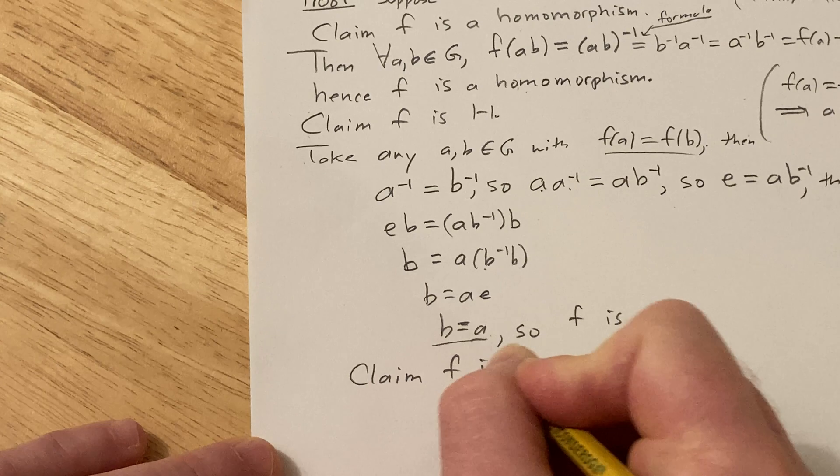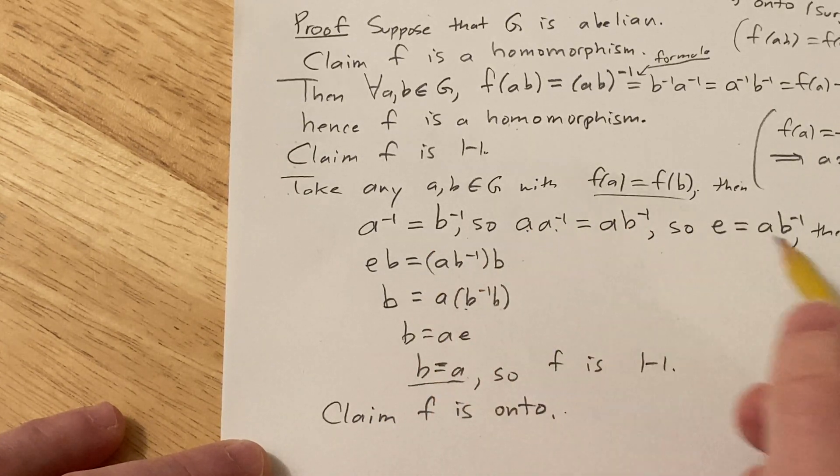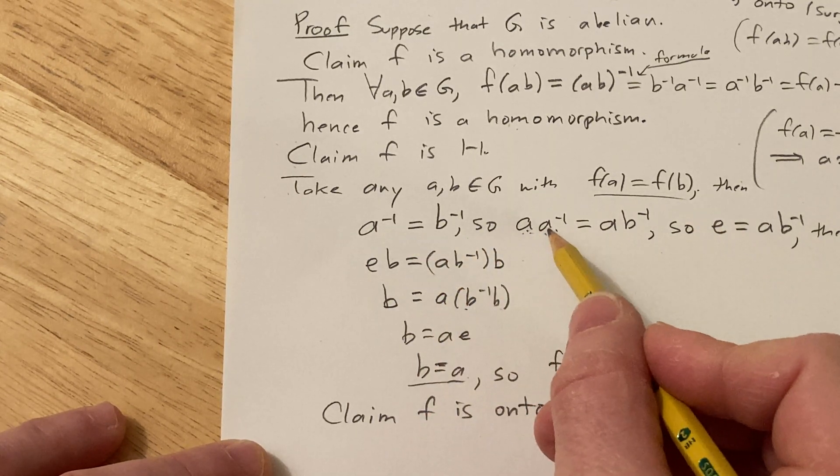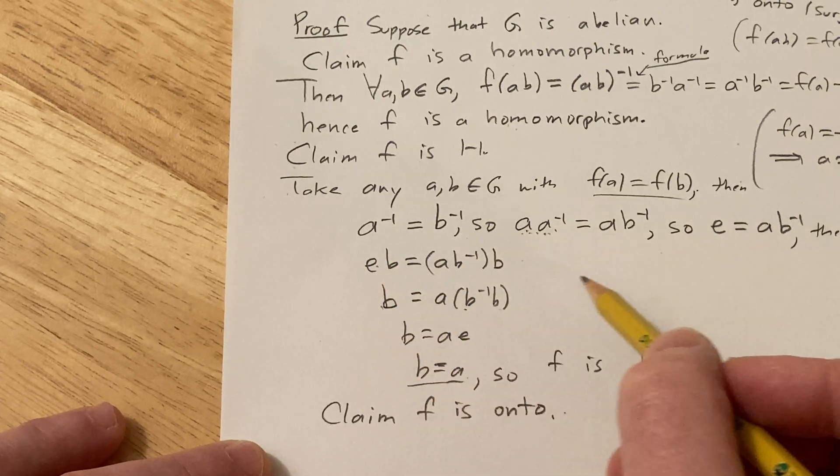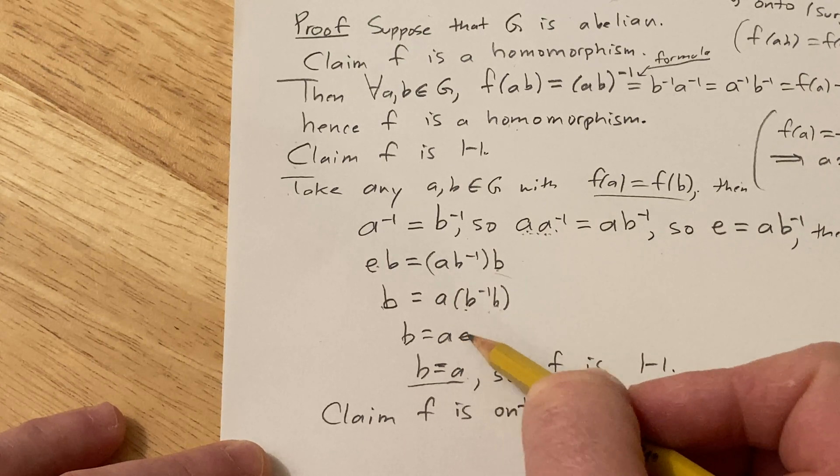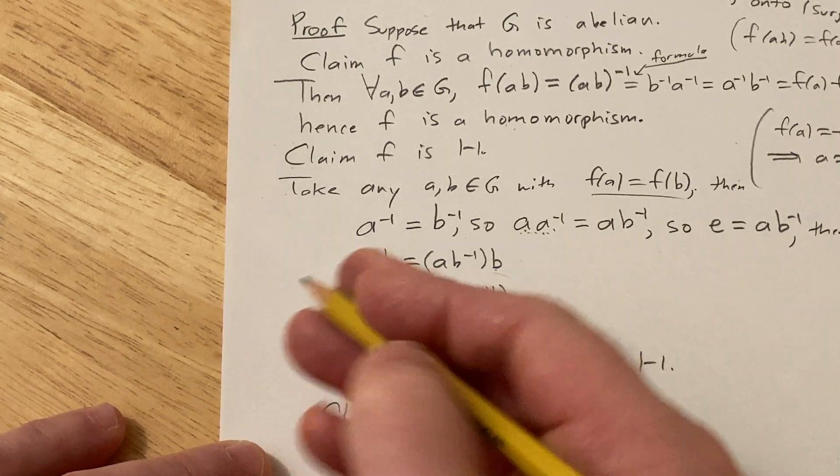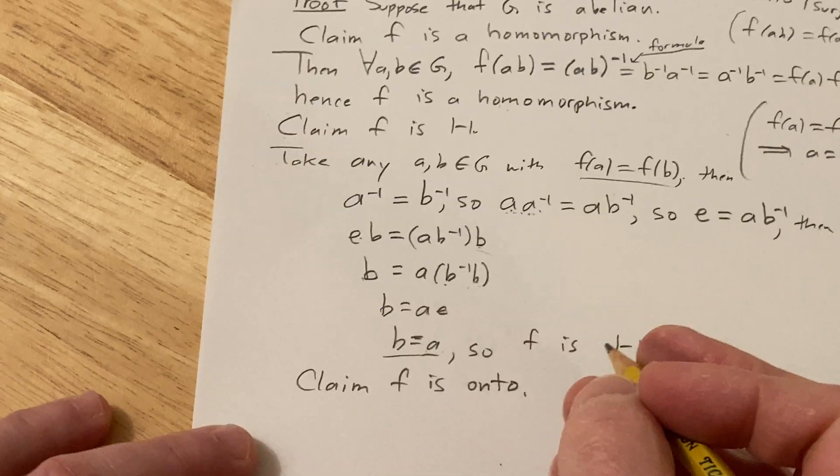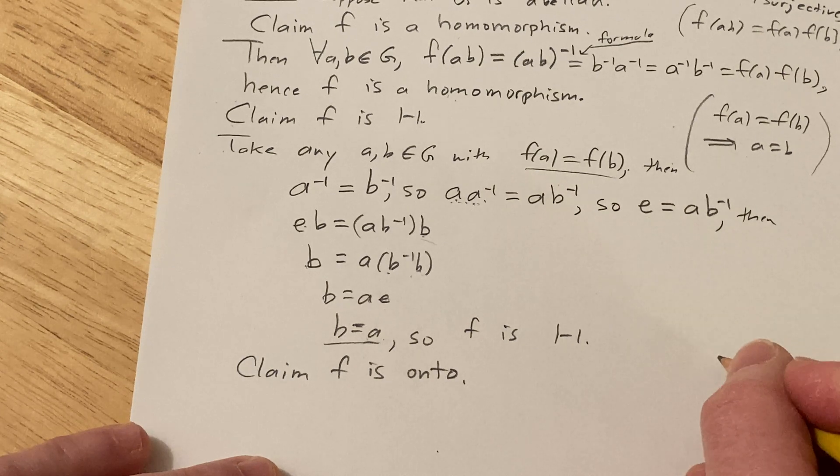Claim: f is onto. I did that pretty quick but the idea is you just basically use properties of a group. You multiply on the left by a, these go away, you just get the identity. The identity times an element is the element. Then you multiply on the right by b, you use associativity and then it's the inverse so you get e. a times e is a because e is the identity, etc. So you know, you would write all that down if you were doing this like for a class or something, but so claim f is onto. All right, so onto, let me just remind you what that means.